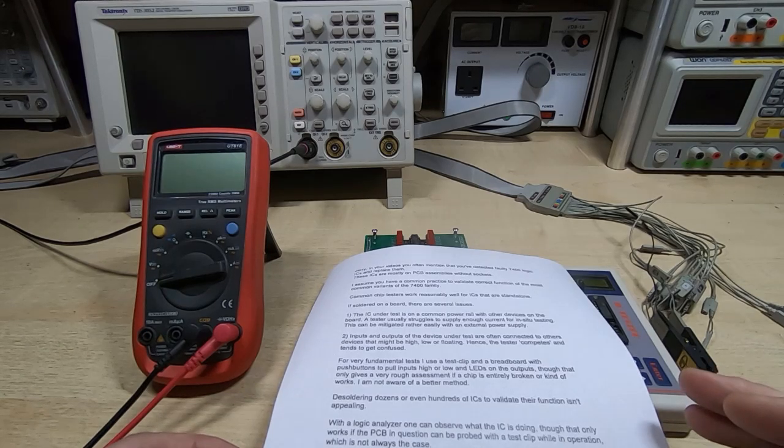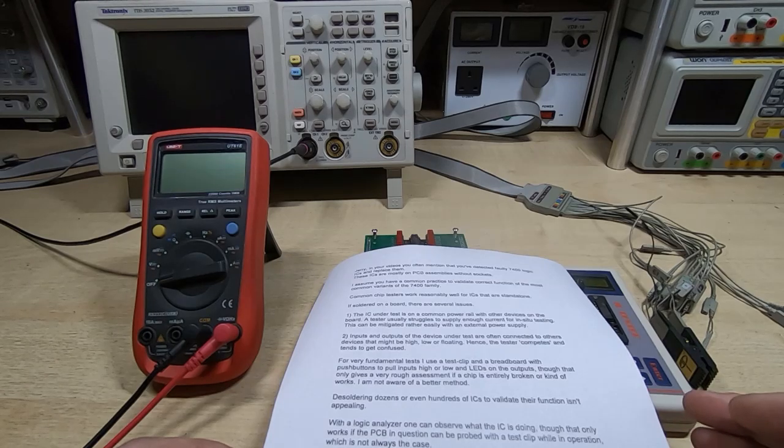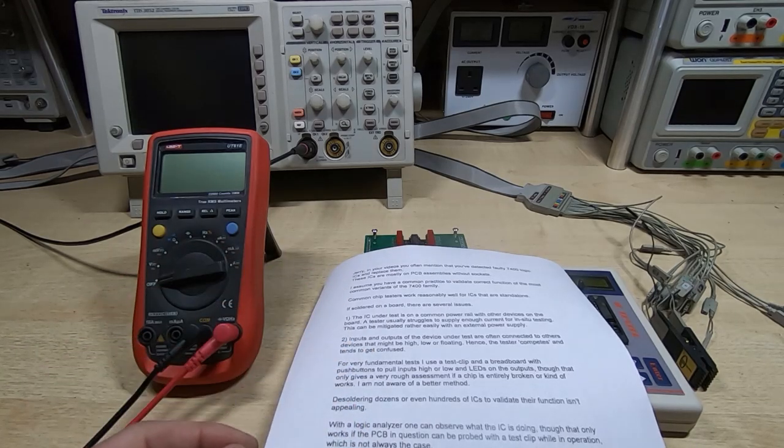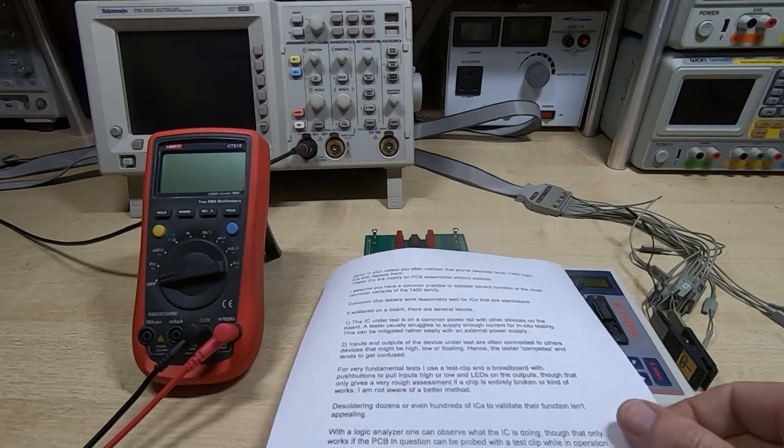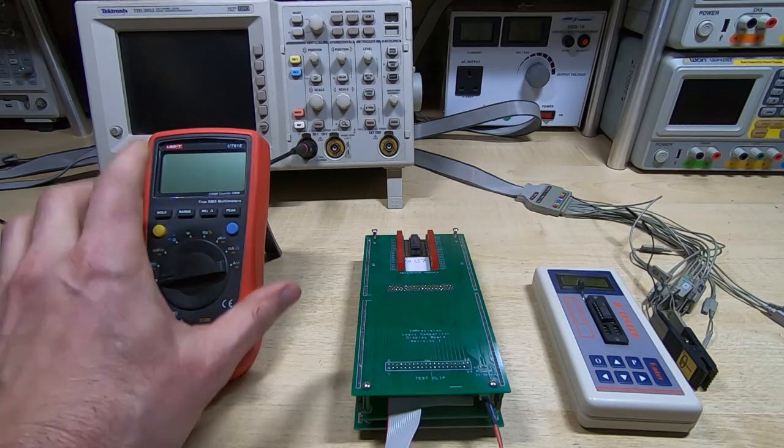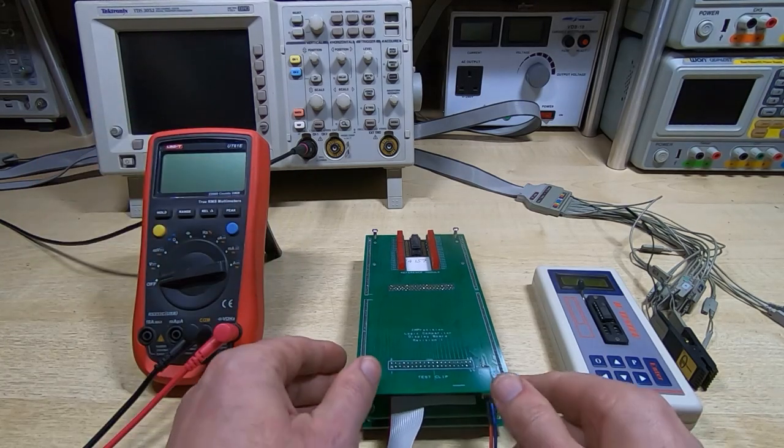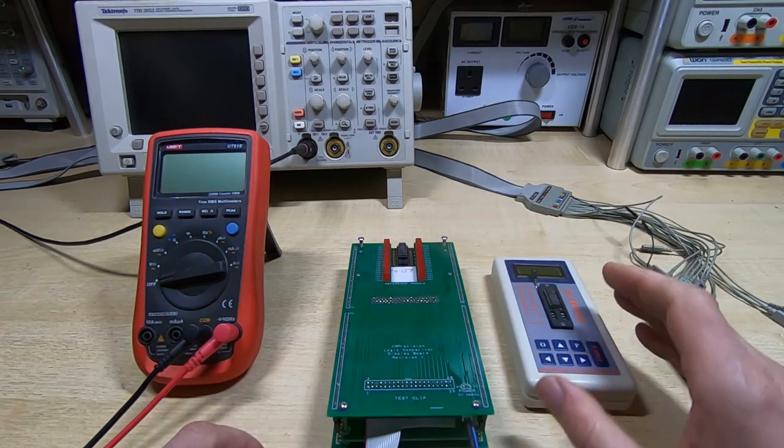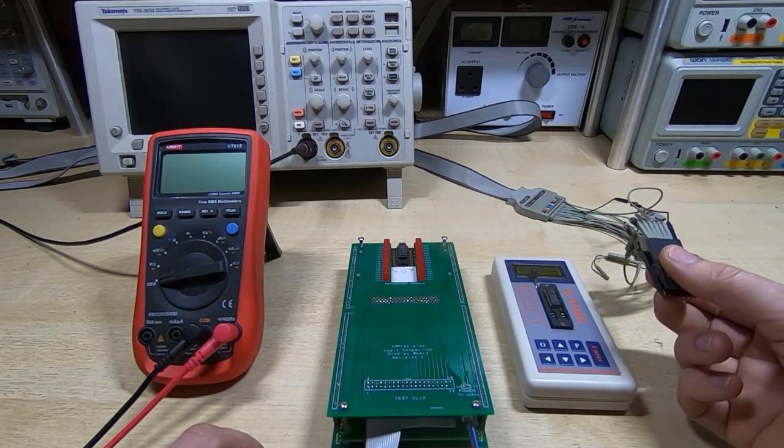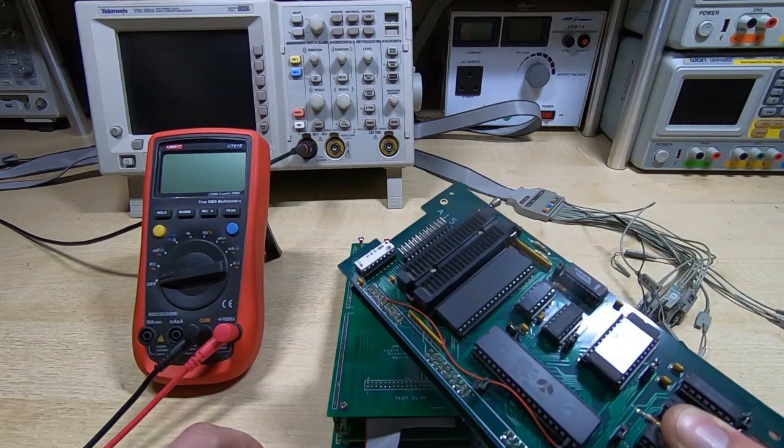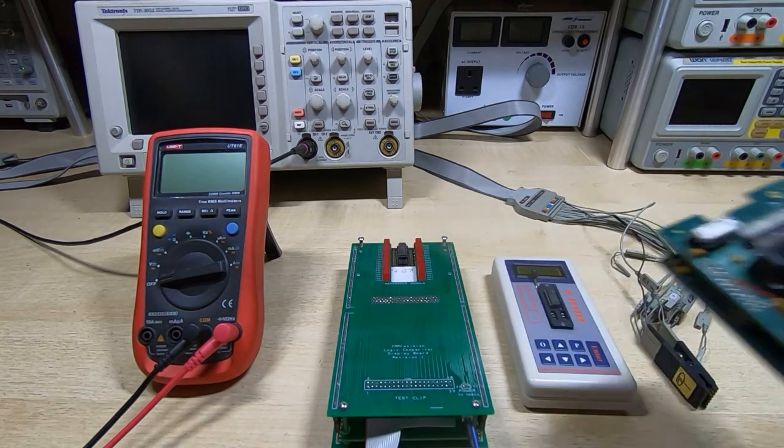And the approach I take varies a great deal depending on the nature of the equipment, the nature of the fault and the equipment that I have in the workshop. So the sorts of equipment I will use are anything from a multimeter, scopes. I have a logic comparator, IC test devices, logic analyzers.